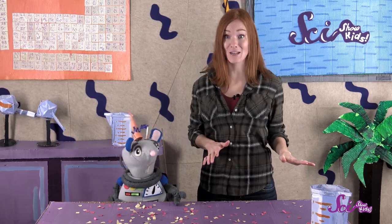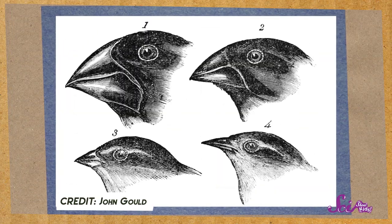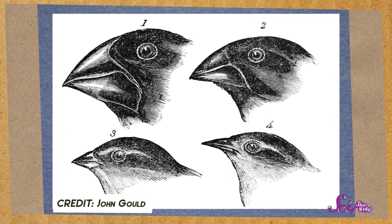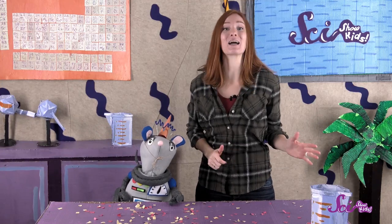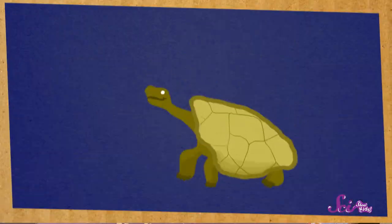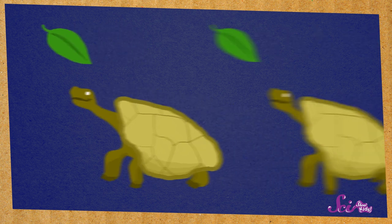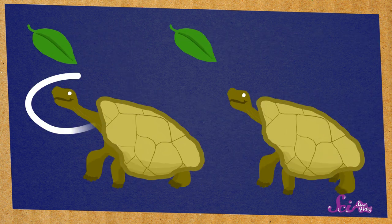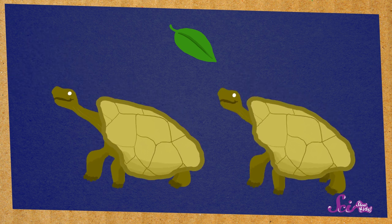And this same idea is true for other animals and plants too, not just bugs and what color they are. For example, birds who happen to be born with bigger, stronger beaks might be able to crack open seeds that birds with smaller beaks can't. And if those birds with bigger beaks get more food and have more babies, then over time we'll see more of those birds with bigger beaks than smaller ones. Or picture tortoises living in a place where plants grow tall and their leaves are pretty far off the ground. In a place like that, tortoises that happen to be born with longer necks will have an easier time reaching the leaves that they need to eat. So they'll be healthier and have more babies, and eventually the long-necked tortoises will take over.